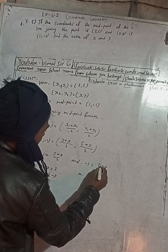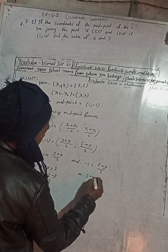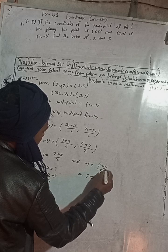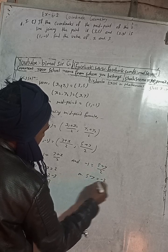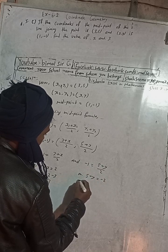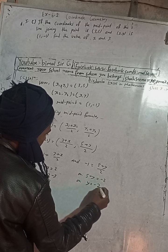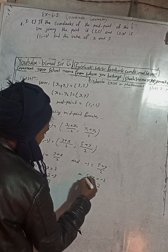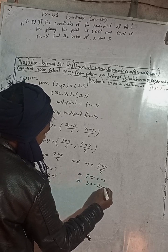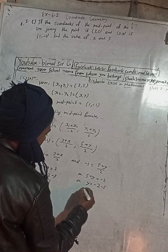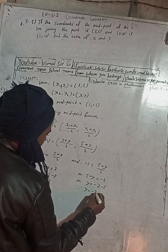In the same way, solving for y: 5 plus y is equal to 2 into minus 1, so 5 plus y equals minus 2. This implies y is equal to minus 2 minus 5, therefore y is equal to minus 7.